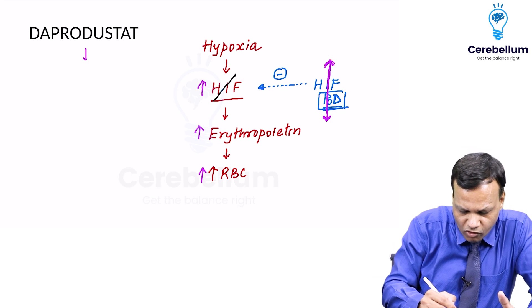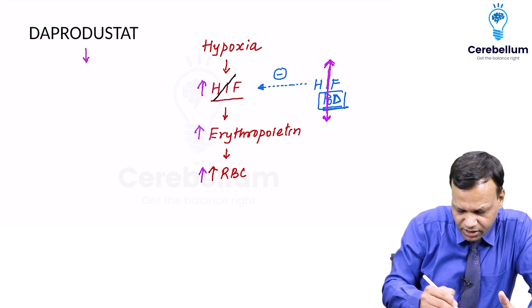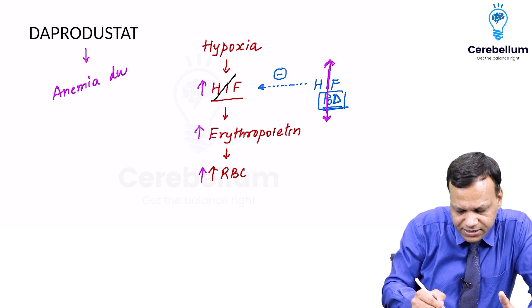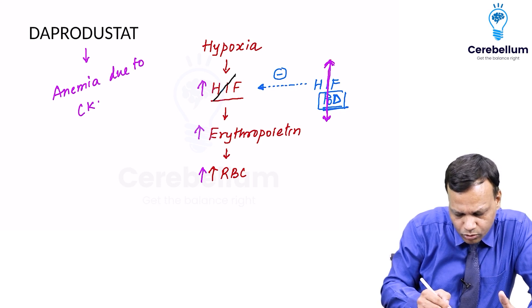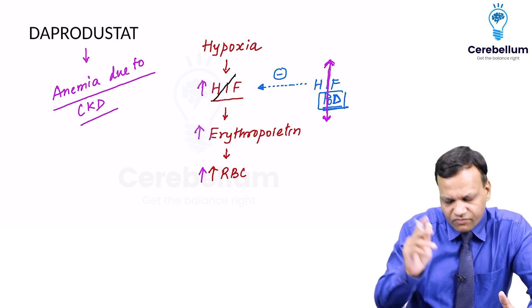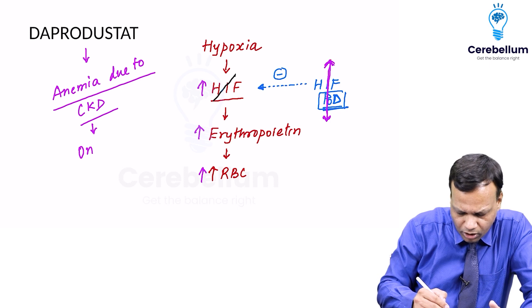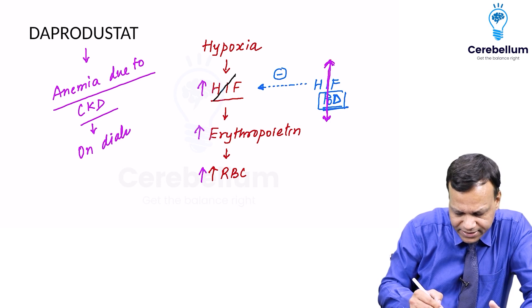This drug is approved for treatment of anemia due to chronic kidney disease. We can use Daprodustat, but the important thing is it is approved only for patients who are on dialysis.